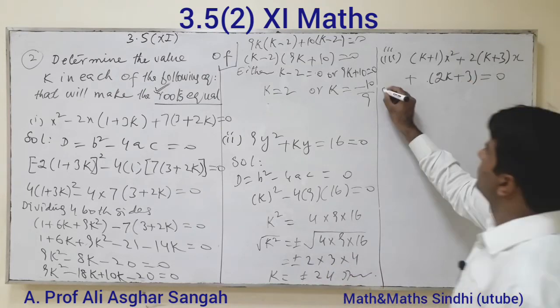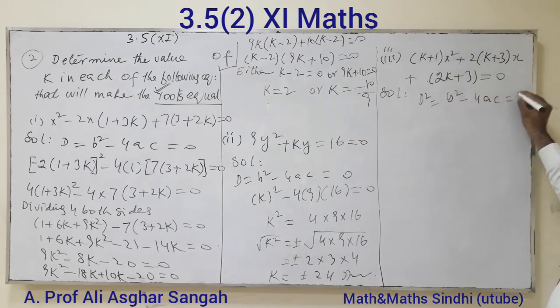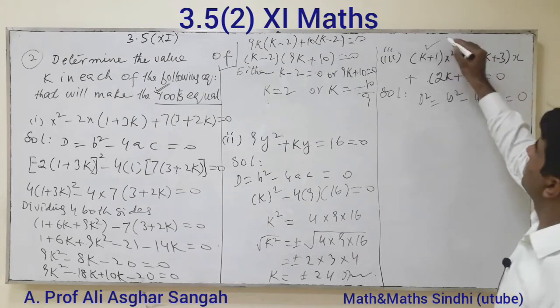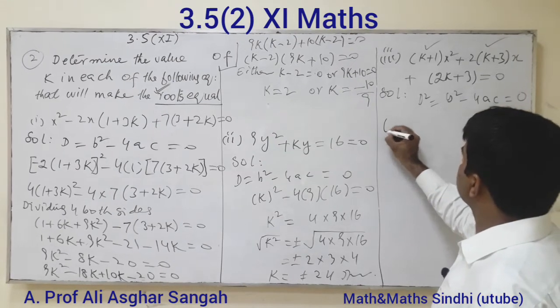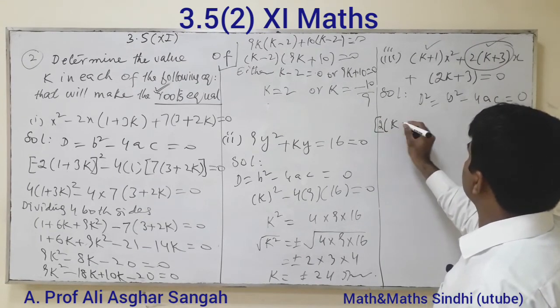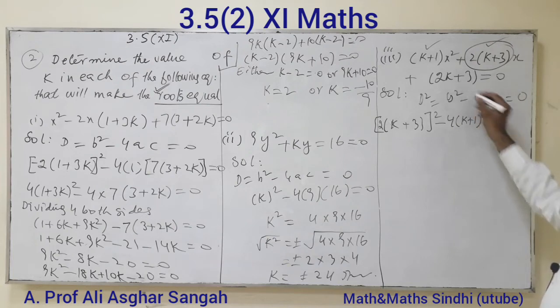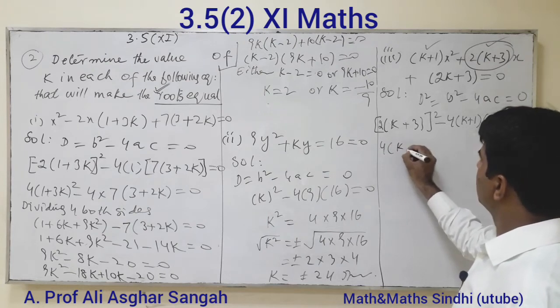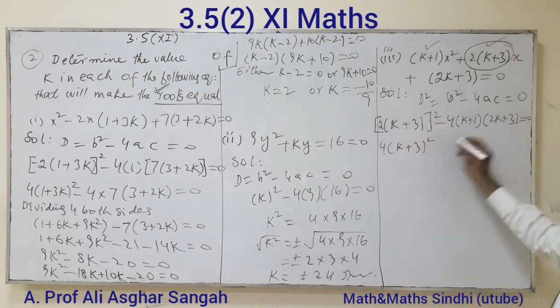Question number 3: D squared equals b squared minus 4ac equals zero. Here a equals K plus 1, b equals 2K plus 3, and c equals 2K plus 3. Putting the values: (2K plus 3) whole squared minus 4 times (K plus 1) times (2K plus 3) equals zero.